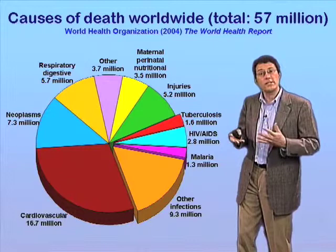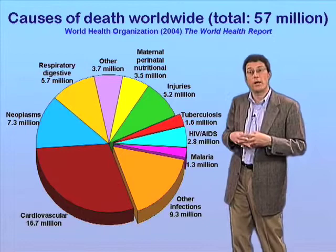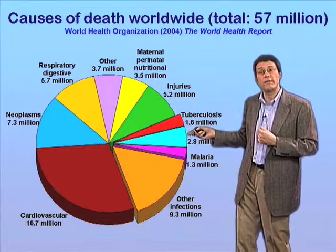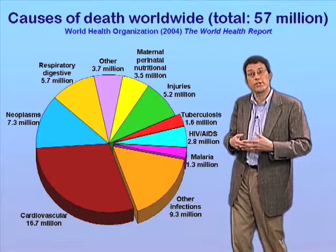Obviously, being immunocompromised due to HIV-AIDS infection predisposes an individual to acquire all kinds of infectious diseases, including tuberculosis. But it's become clear recently that having active tuberculosis also somehow accelerates progression from HIV infection to full-blown AIDS. So it's a real synergy between these two diseases, the convergence of which in developing countries has spelled a real disaster for public health globally.